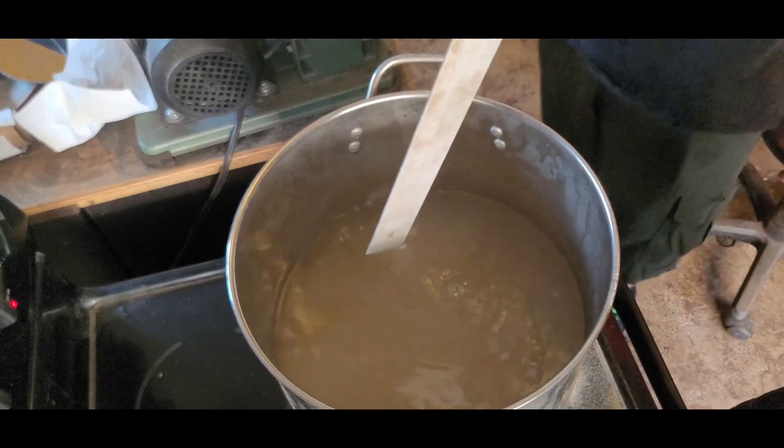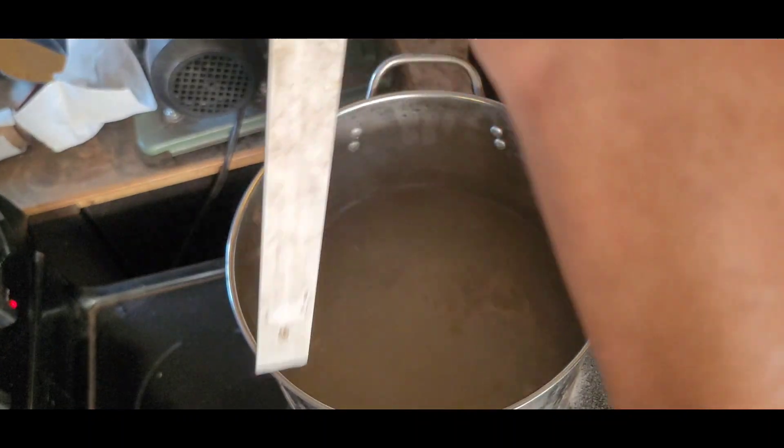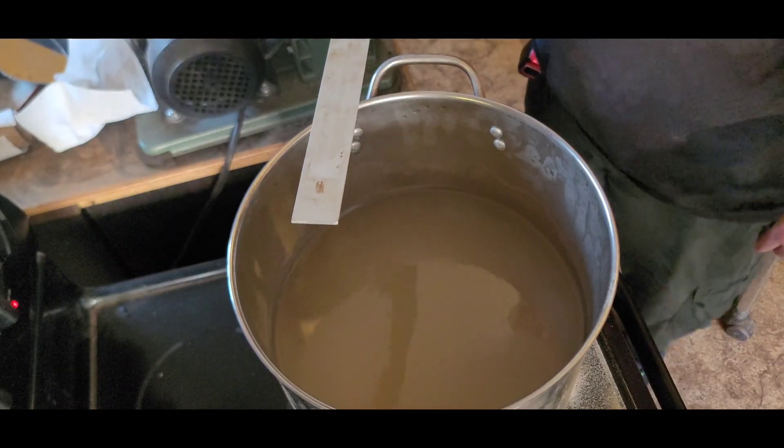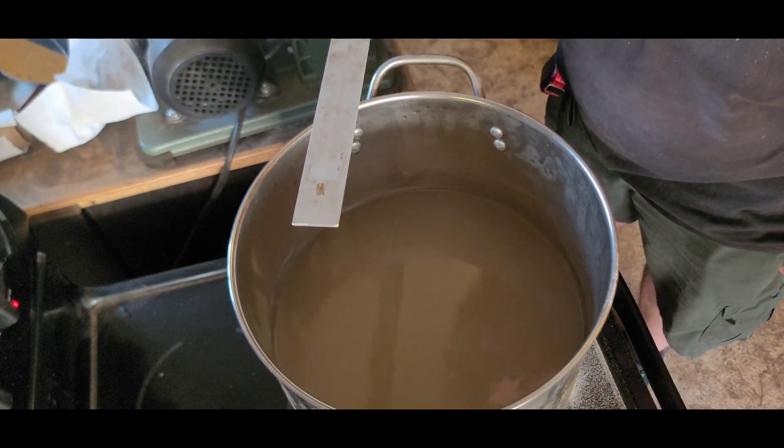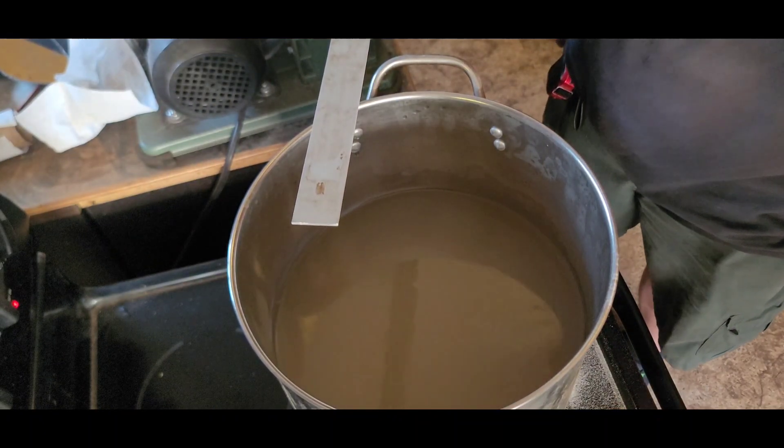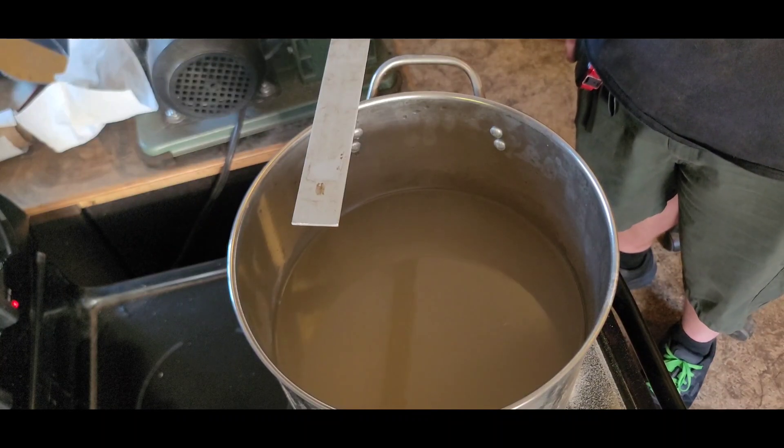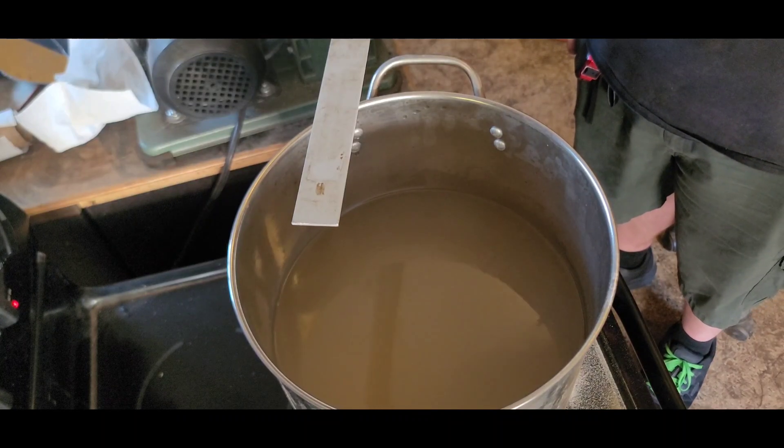Xanthan gum is the thickening agent that's going to make it so that it is a little bit more gel than just a straight liquid. Okay, but you don't want to put too much in because otherwise it gets too thick and that's also not ideal.